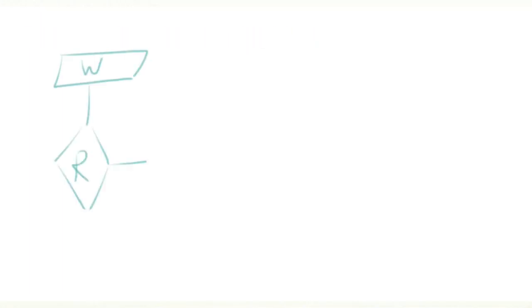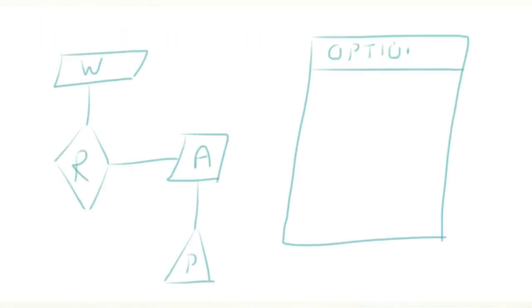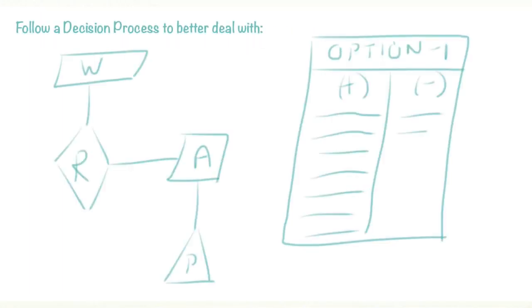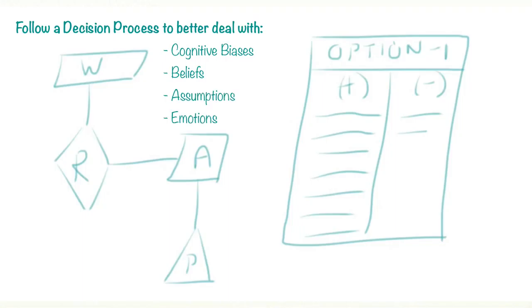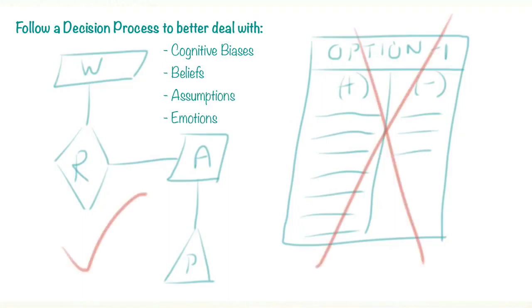If you follow a process instead of a pros and cons approach, you will better deal with the cognitive biases, beliefs, assumptions and emotions that can otherwise trick you into a suboptimal decision.